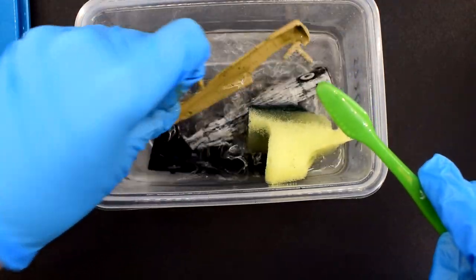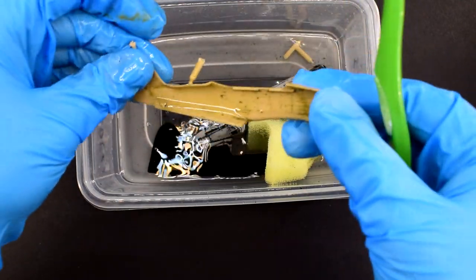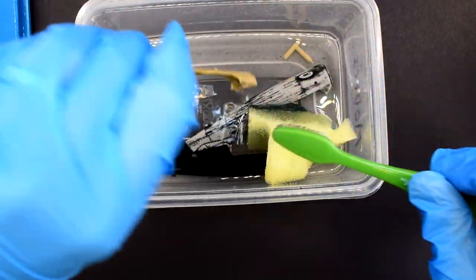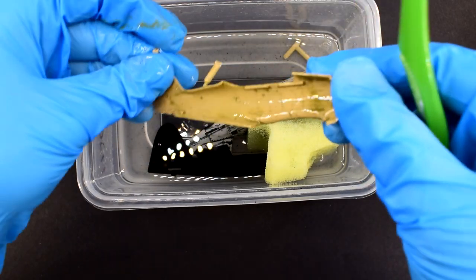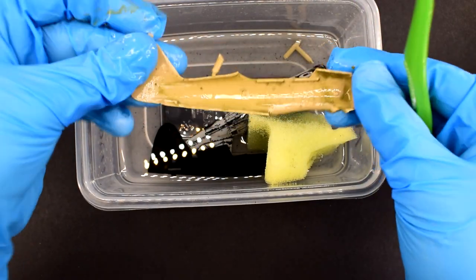Depending on your attention to detail, you can remove most of this paint. Any stubborn areas, simply pop your plastic part back in the IPA for a little bit longer and then try removing it again.